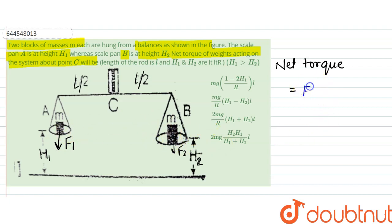So it would be F2 into L by 2, the distance L by 2 minus F1 into L by 2. So that would be equal to F2 minus F1 into L by 2 here.